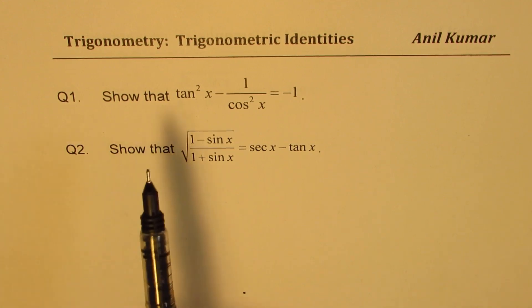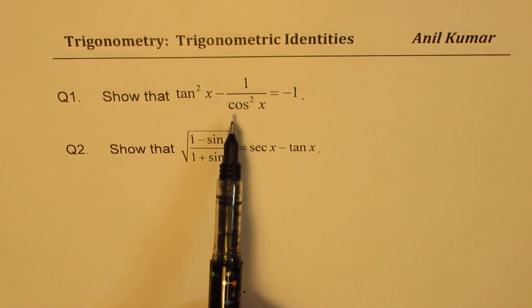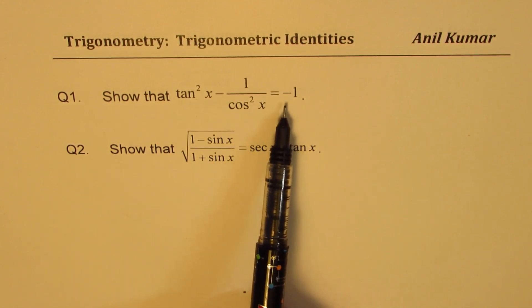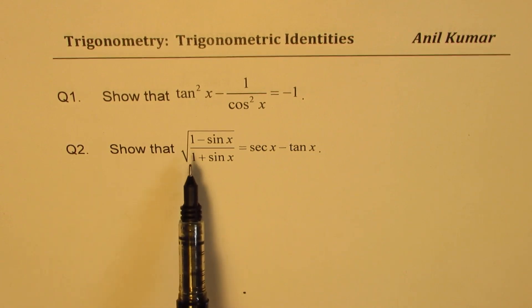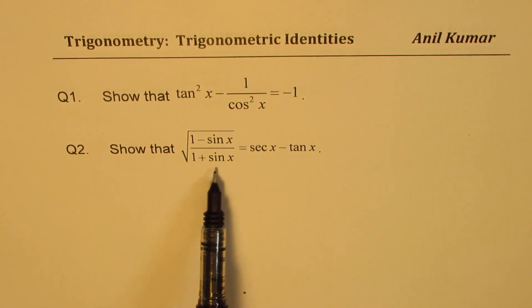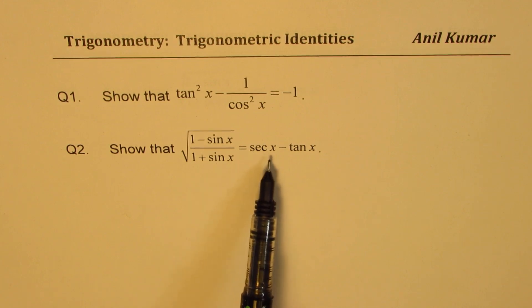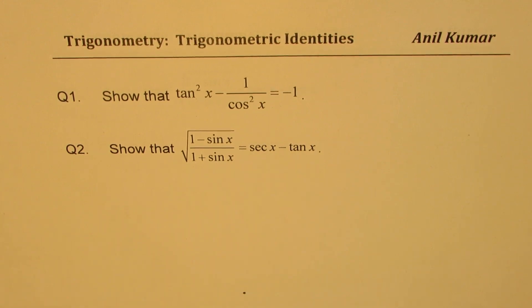The first one is, show that tan²x - 1/cos²x equals -1. Question 2 is, show that √((1-sinx)/(1+sinx)) equals secx - tanx. You can always pause the video, answer the question, and then look into my suggestions.